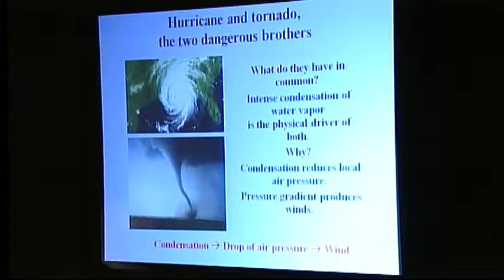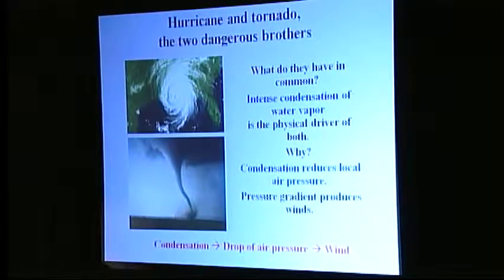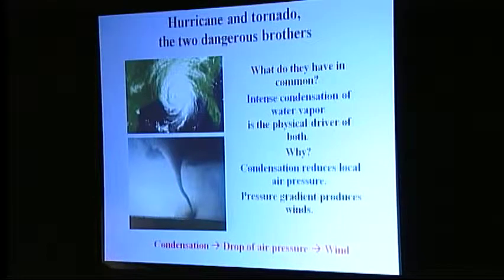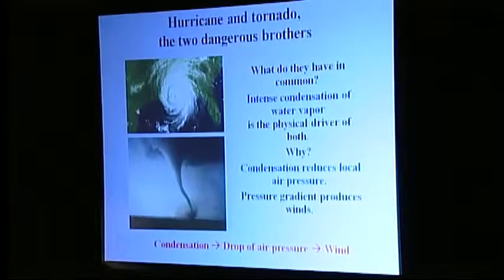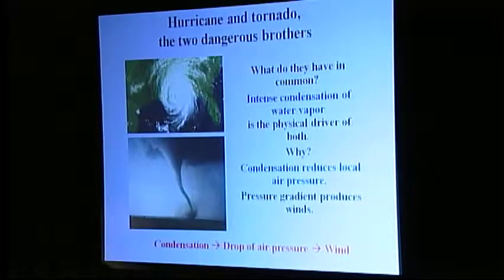An attentive observer will acknowledge that all the major atmospheric events, including hurricanes and tornadoes, are always accompanied by cloud formation and precipitation — that is, by condensation of water vapor. During condensation, water vapor is removed from the gas phase, so the total air pressure is locally reduced. As soon as there appears a region of low pressure, the neighboring air accelerates towards the region of condensation, ultimately producing violent winds.